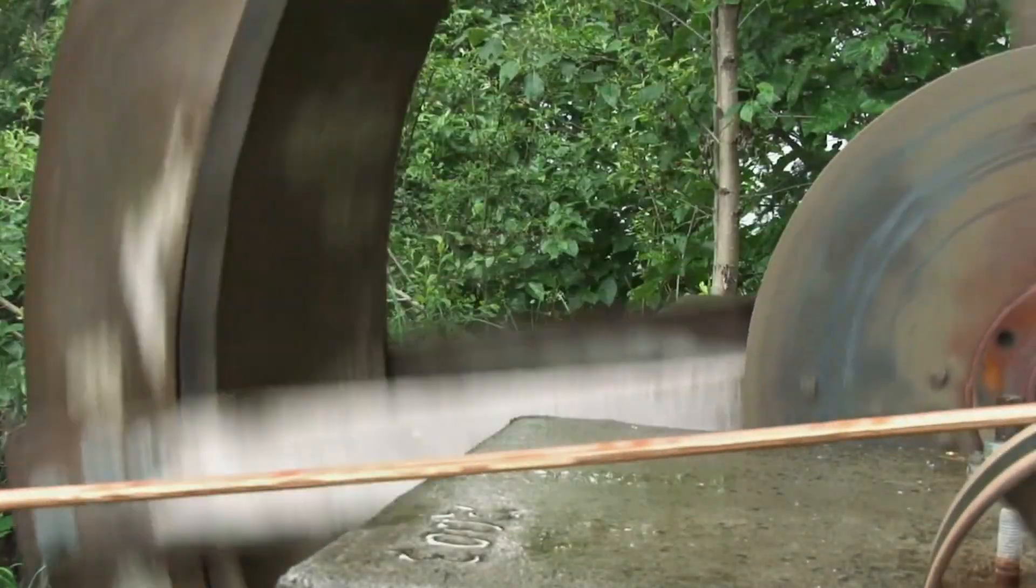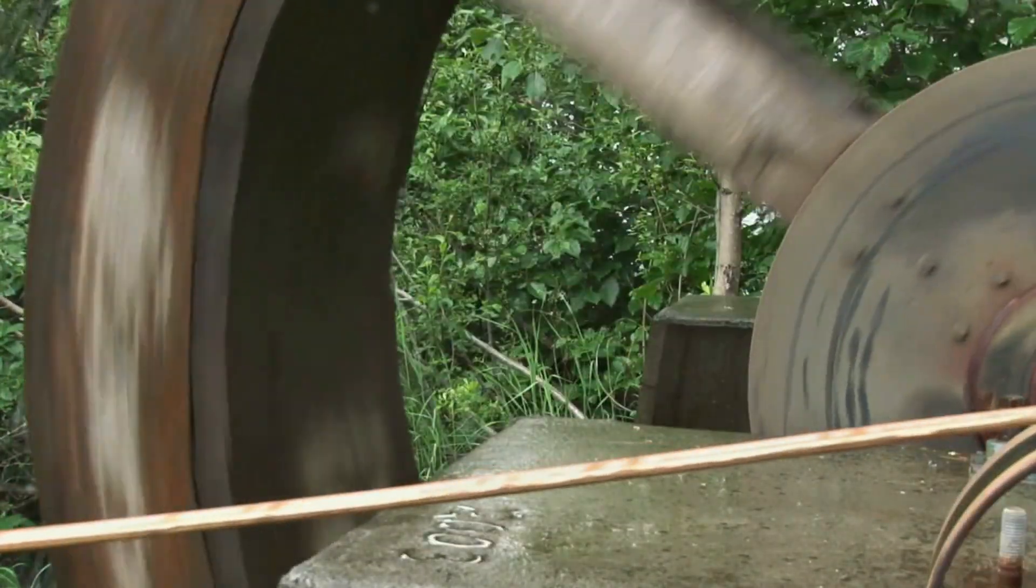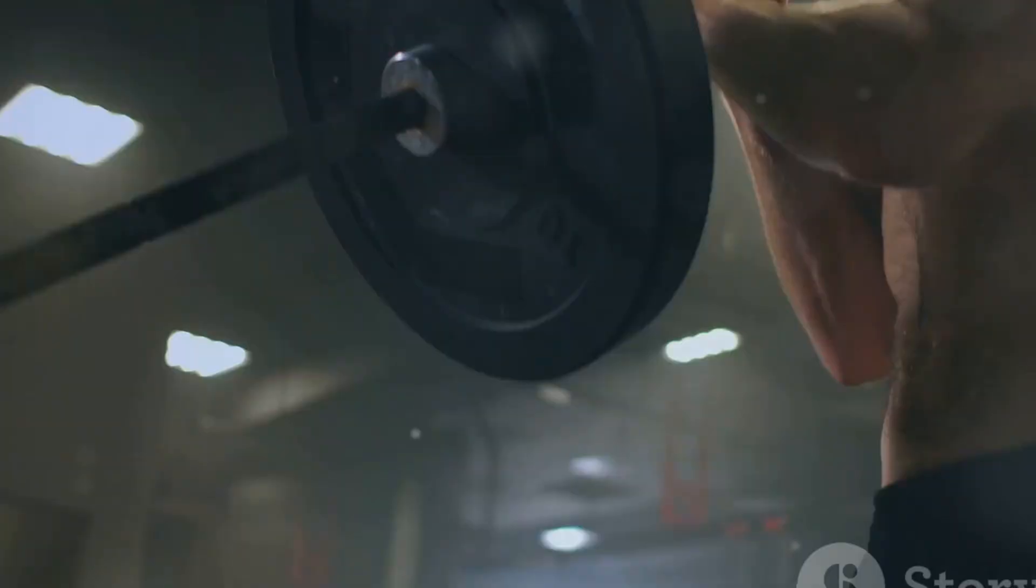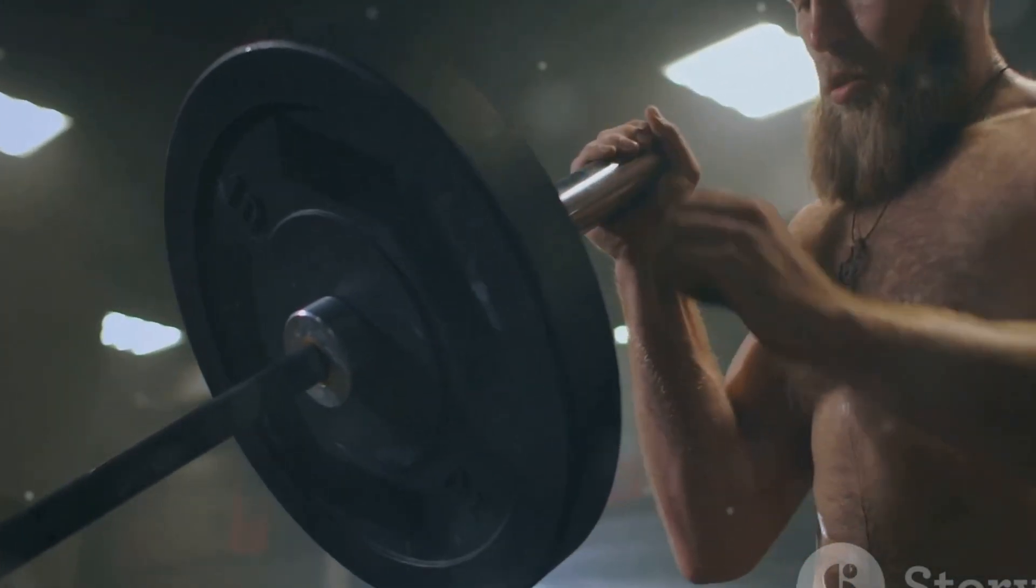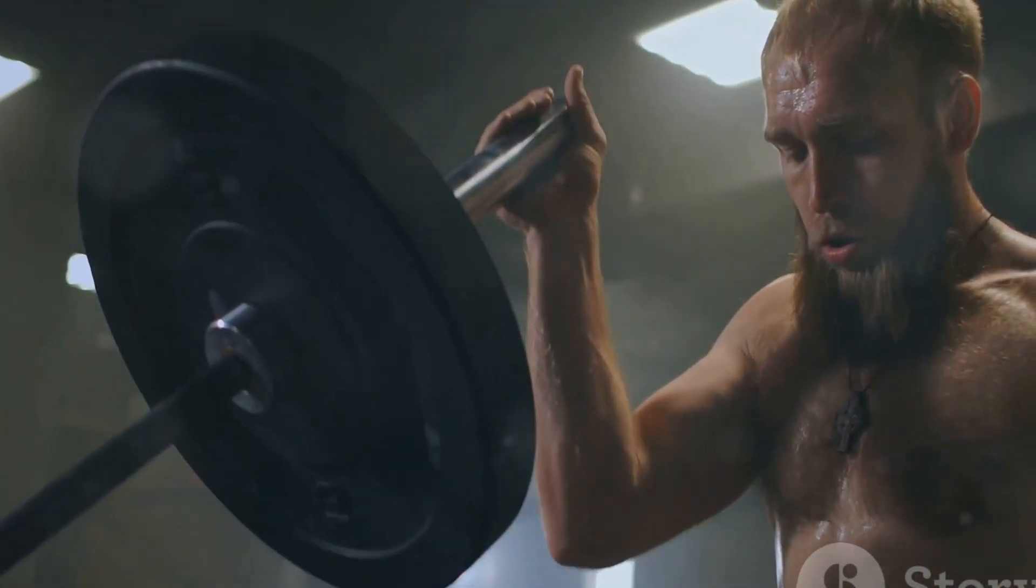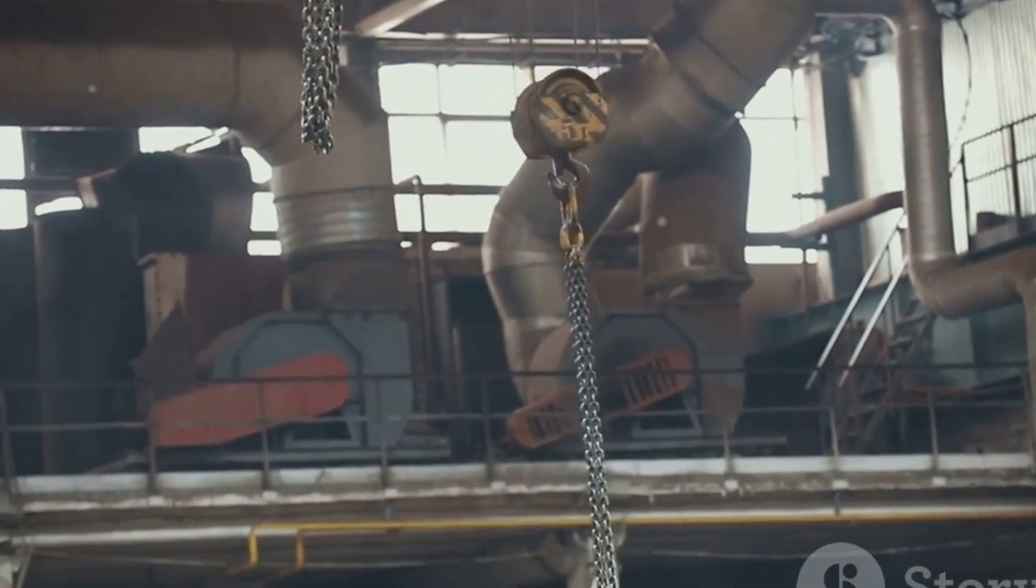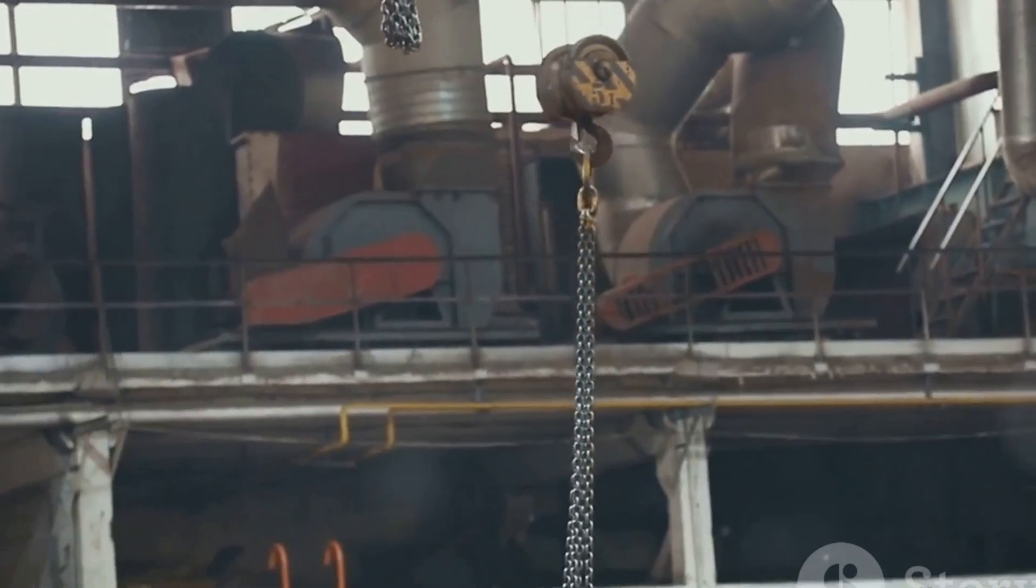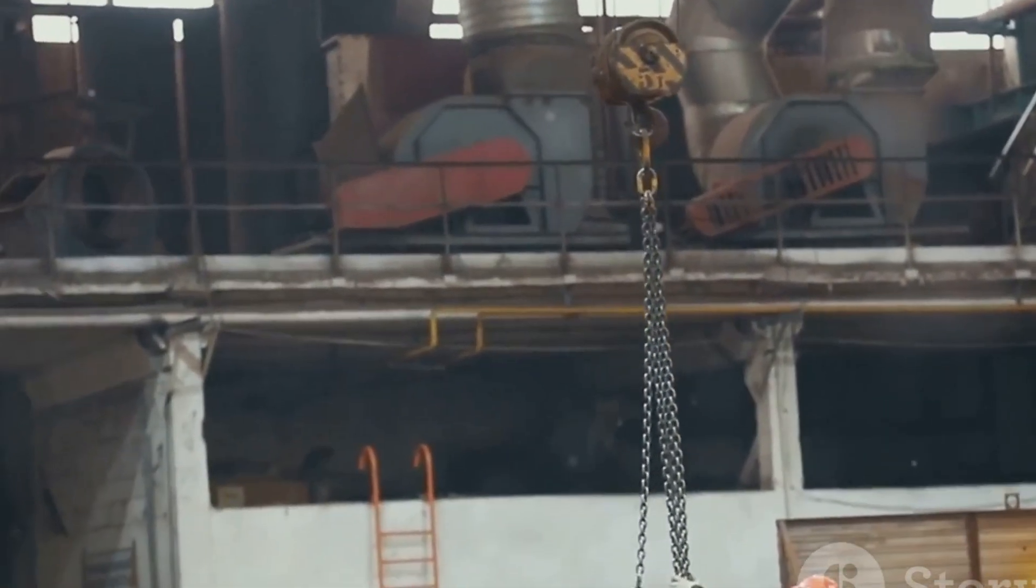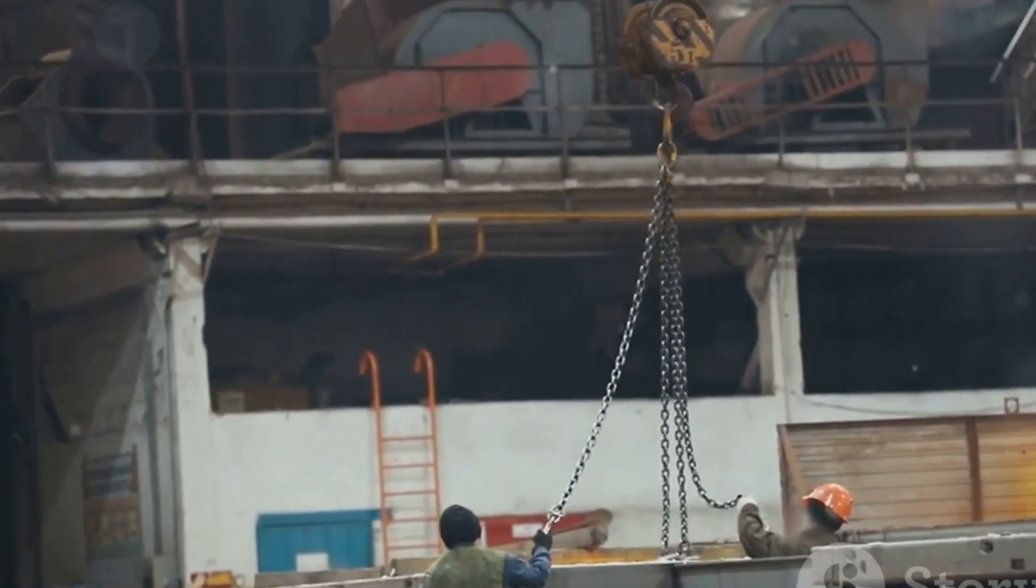Moving on to pulleys, imagine a well with a bucket attached to a rope that runs over a wheel. That wheel is a pulley. Pulleys help us lift heavy weights with less effort by changing the direction of the force we apply. A single pulley provides no mechanical advantage, but a system of pulleys known as a block and tackle multiplies the force we exert.